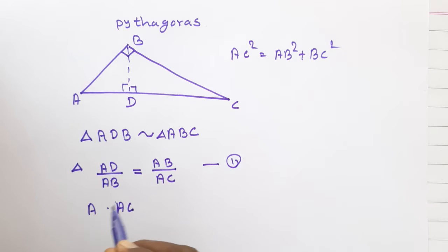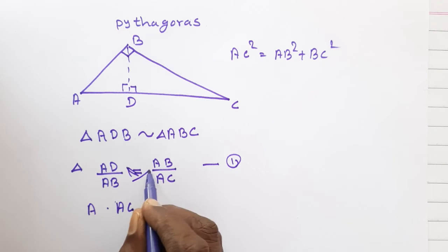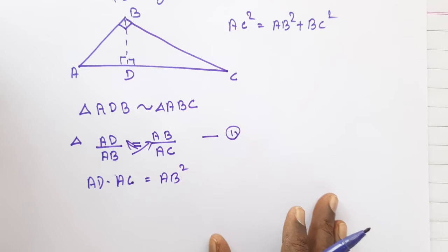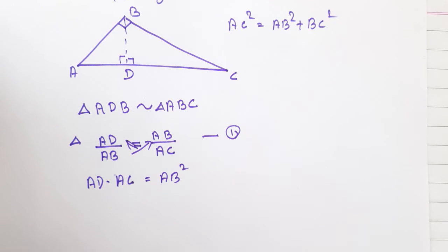Cross multiply them: AD dot AC is equal to AB square. Am I correct? That's all. Let it be equation one. Next, what's the next triangle?